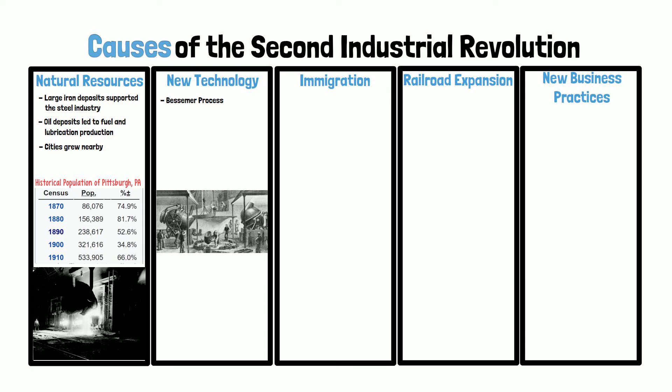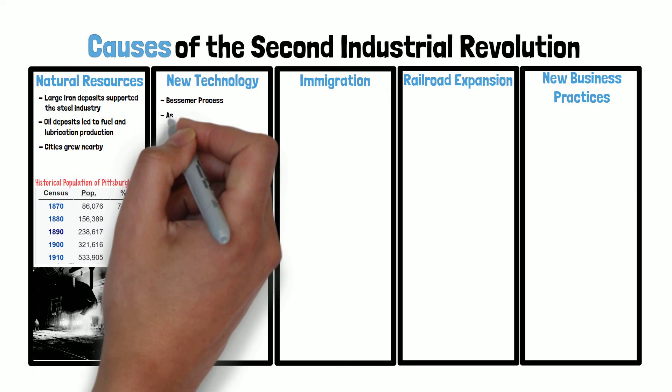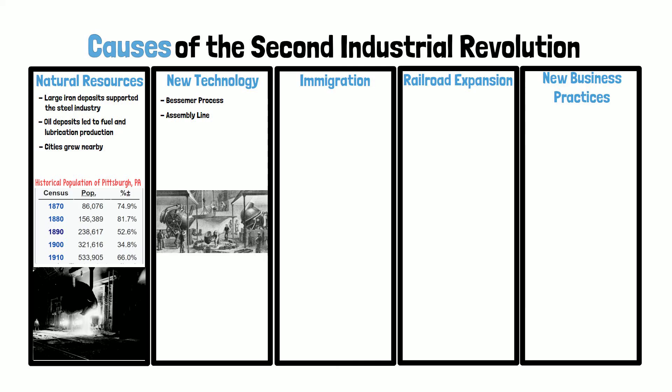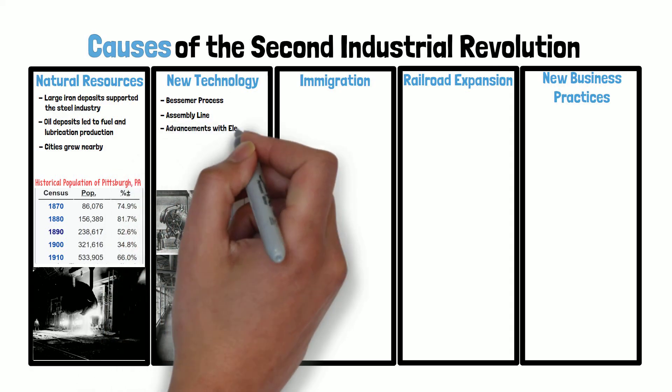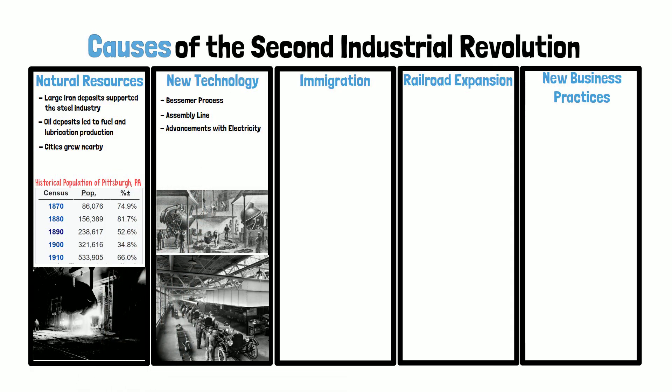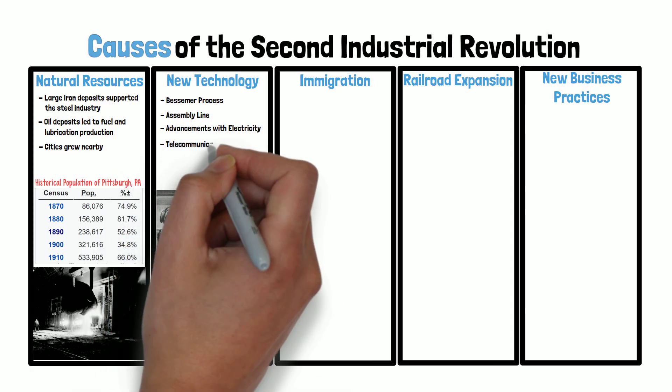Other advancements also helped further the Industrial Revolution. The assembly line, perfected by Henry Ford, accelerated the mass manufacturing of industrial goods such as the automobile. Inventions to improve communications such as the telegraph and the mastering of electricity by Thomas Edison greatly improved productivity.